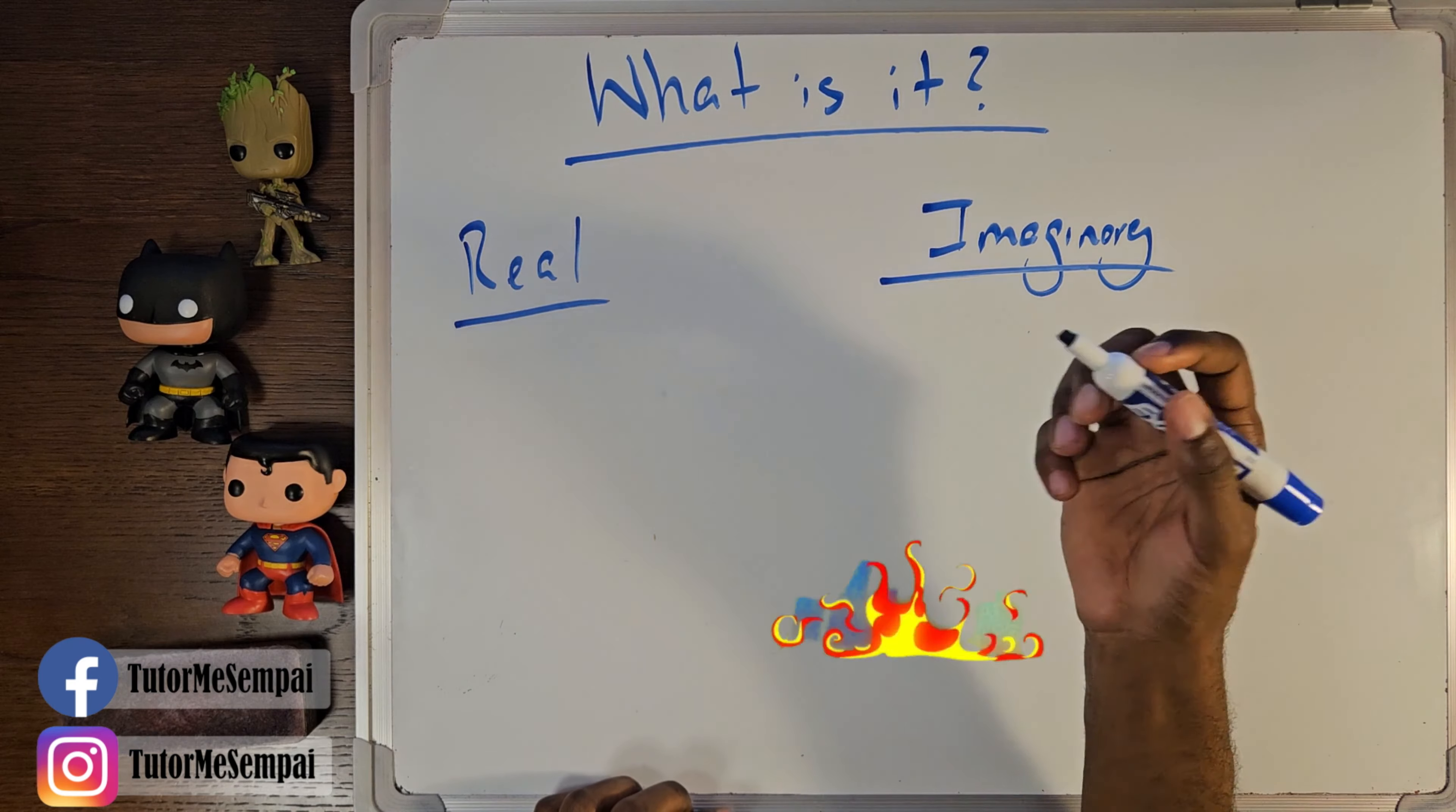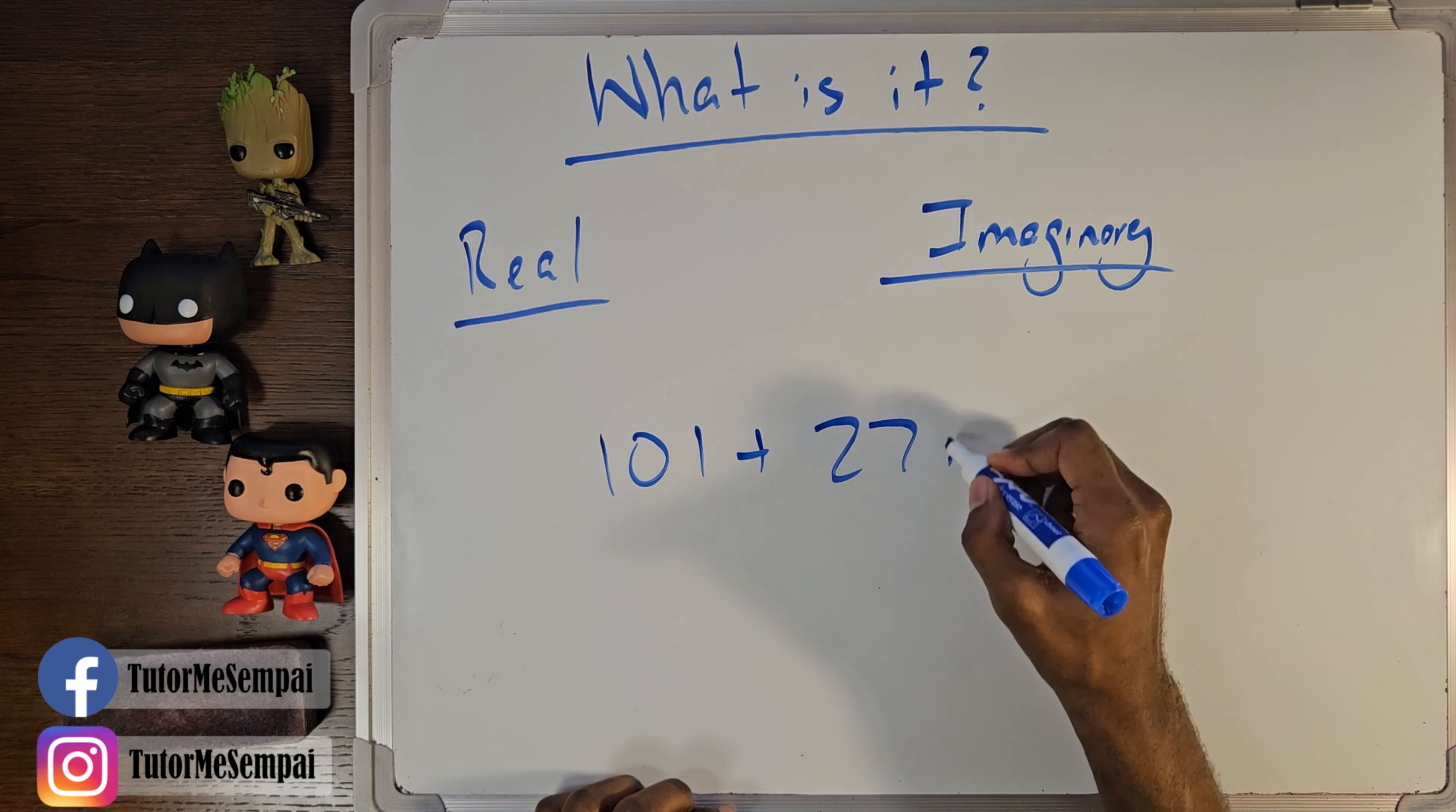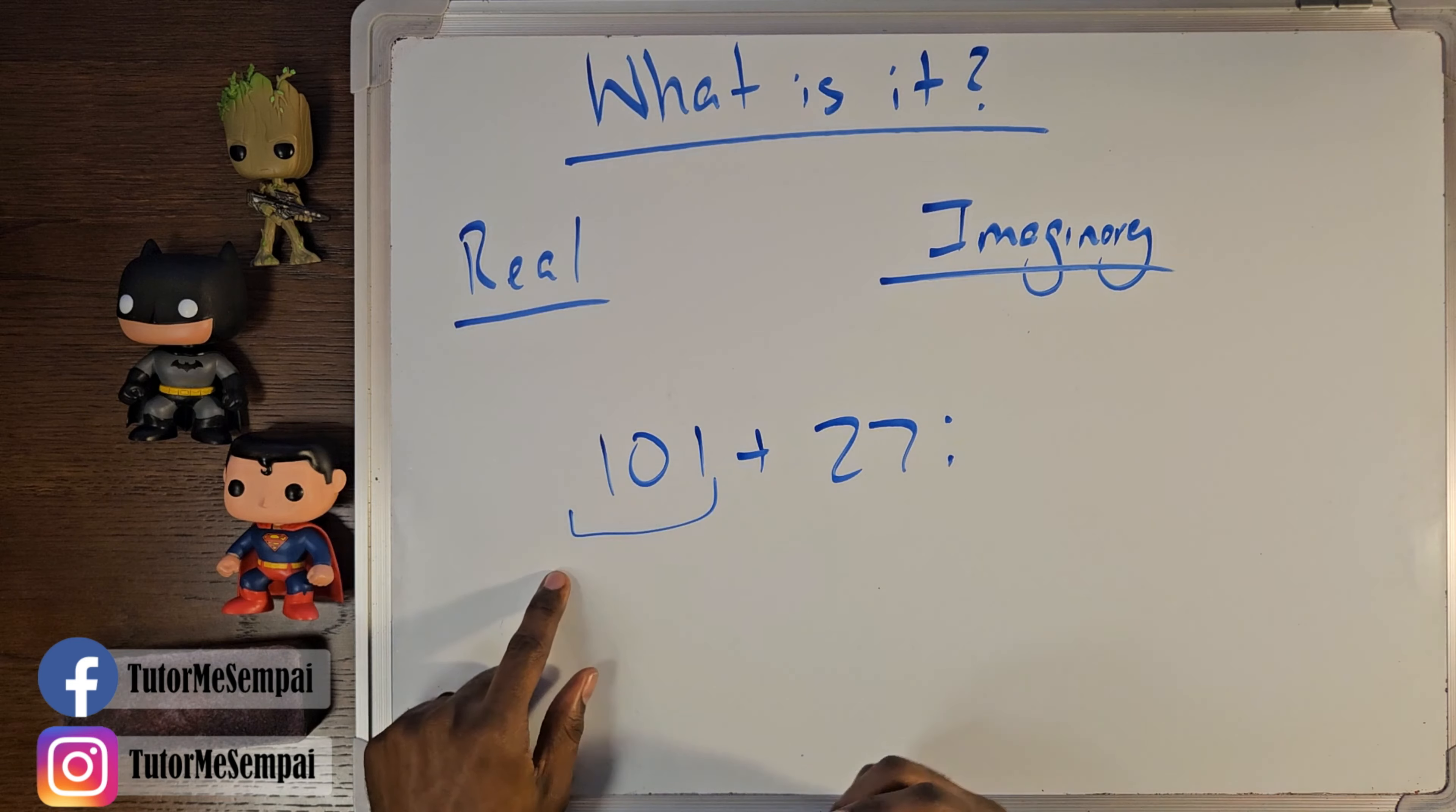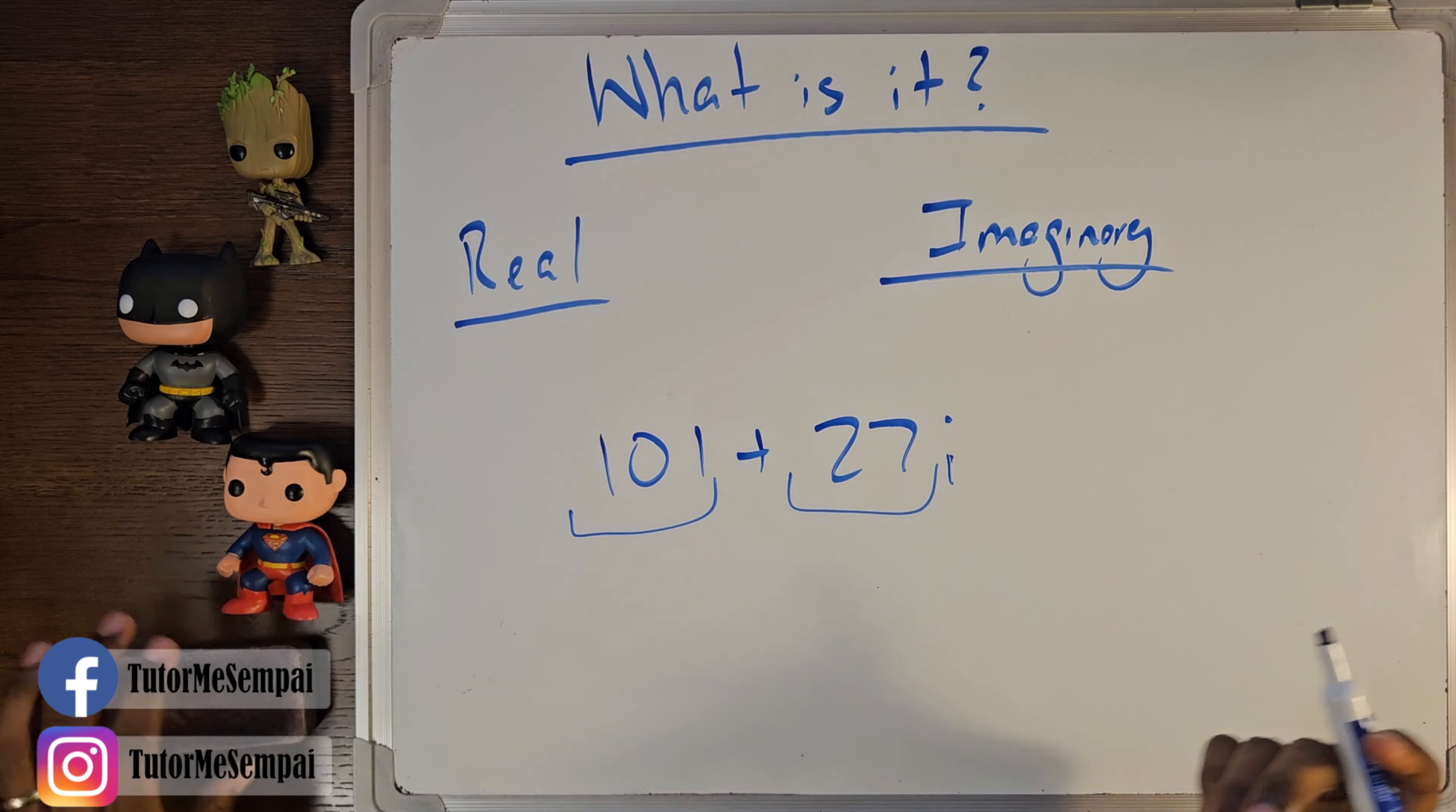But what if I told you that actually all the numbers that you've dealt with in the past are complex numbers? Would you believe me? Well, let's say we had a number like this. Let's say we had 101 plus, let's say, 27i, right? This is clearly a complex number. We have a real component and we have an imaginary component. The real component is going to be that 101, and your imaginary component will be that 27, which is attached to the i.